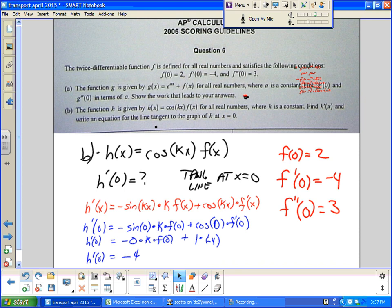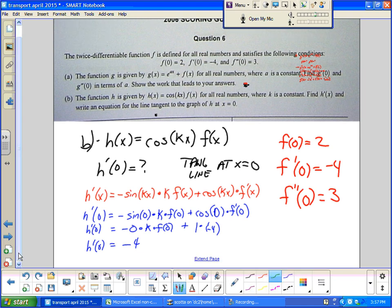And we get this whole thing. And I get that h prime of zero is negative four. Now to find the tangent line, all I need is a slope and a point. Well, I know the slope is negative four. I just have to find the point at x equals zero. Well, I have to plug that back in then into the original function right here.